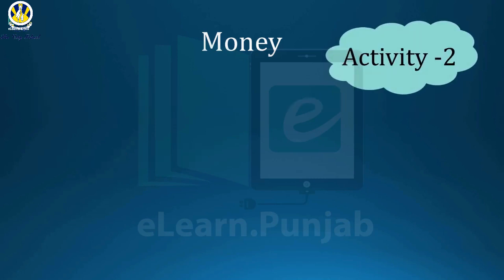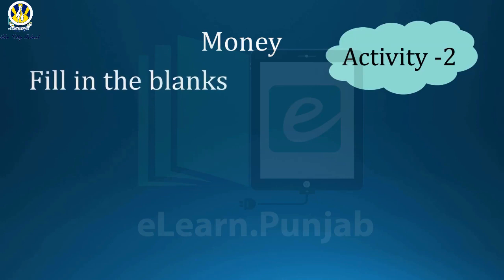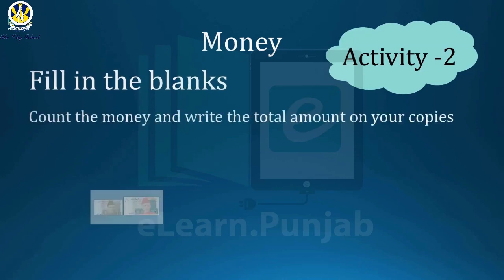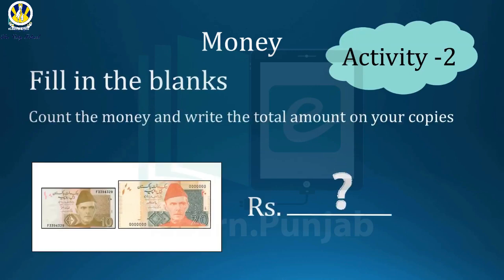Activity two: fill in the blanks. Count the money and write the total amount in your copies. The total amount is rupees thirty.